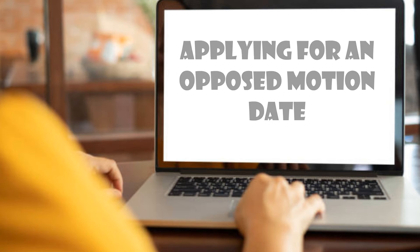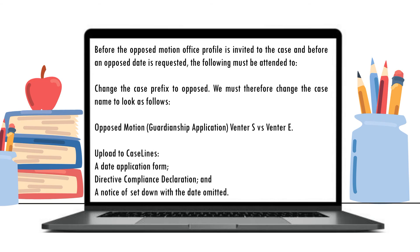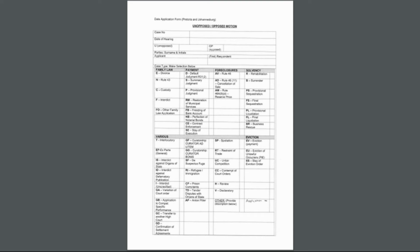Applying for an Opposed Motion Date. Before the Opposed Motion Office Profile is invited to the case and before an opposed date is requested, the following must be attended to. Change the case prefix — as it currently states that the matter is an unopposed motion despite being opposed — so change the case name to: Opposed Motion, Guardianship Application, FENTA S vs FENTA E. Upload to CaseLines a date application form, directive compliance declaration, and a notice of set down with the date submitted. Regarding the date application form, make sure to use the latest version. Before we upload the form, we need to complete the relevant details.